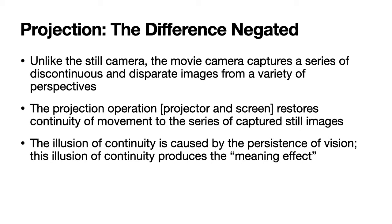Objective reality out there is captured by the movie camera, but not in one flow, not in a stream. Rather, the moving images we see are actually broken down into several adjacent still images which are almost the same but not quite. When we project these at a particular speed onto the screen, these disparate, discontinuous images seem as if they flow in a continuity. That is how continuity of movement is created. The illusion of continuity is caused by the persistence of vision, and this illusion produces the meaning effect.